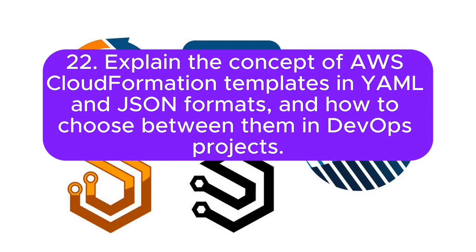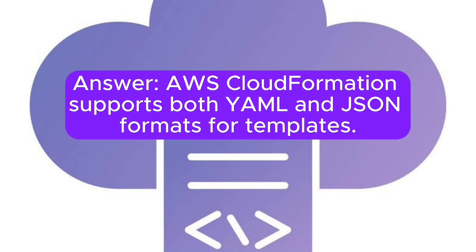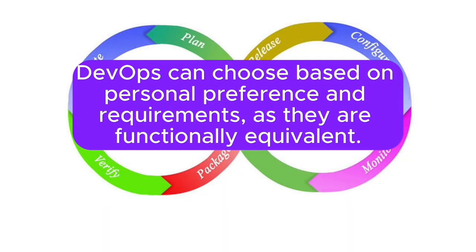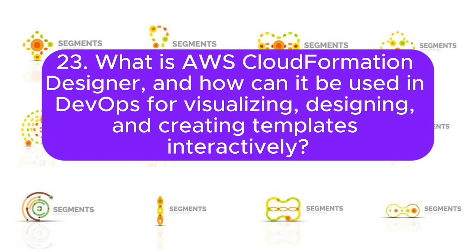Question 22: Explain the AWS CloudFormation templates in YAML and JSON formats and how to choose between them in DevOps projects. Answer: AWS CloudFormation supports both YAML and JSON formats for templates. DevOps can choose based on personal preference and requirements, as they are functionally equivalent.